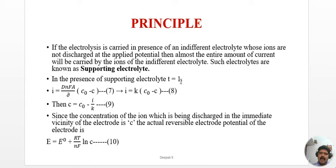With excess supporting electrolyte, t can be taken as 1, and the equation simplifies to i = DNFa/δ · (C0 − C). Replacing DNFa/δ with constant k gives i = k(C0 − C), which rearranges to C = C0 − i/k. The actual reversible electrode potential, according to the Nernst equation, is E = E0 + (RT/nF) ln C, where C is the concentration at the immediate vicinity of the electrode.